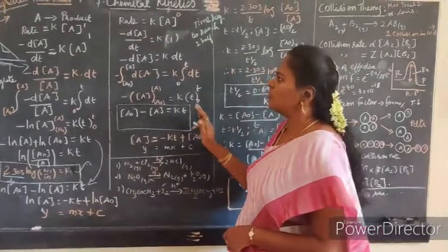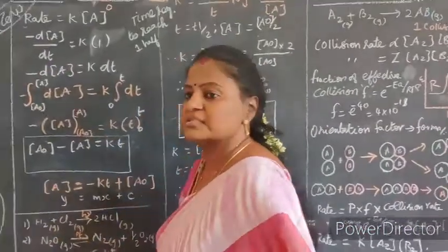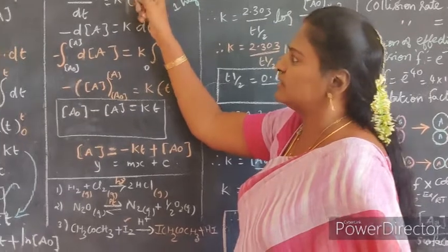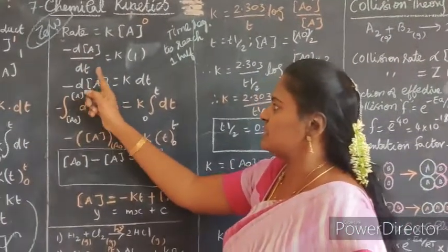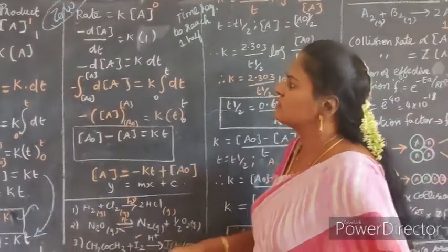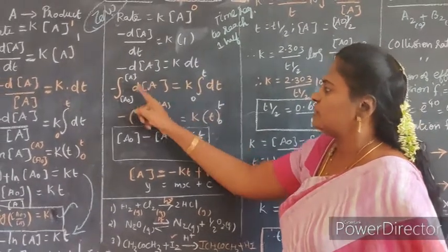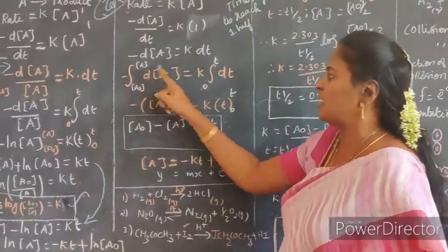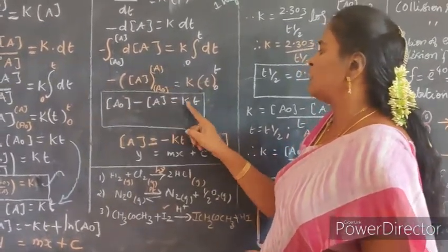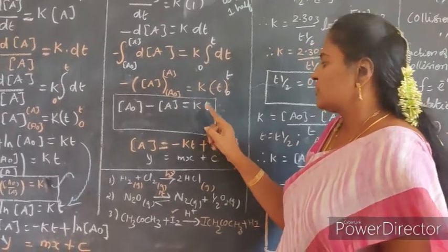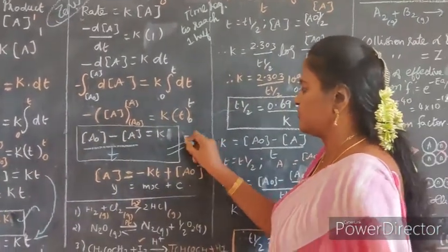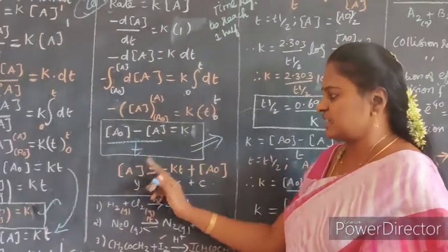Let us move on to the zero order rate constant. For zero order, the rate depends on K into A to the power 0. N value is 0 here. So minus dA/dt equals K, since anything to the power 0 is 1. Integrating this with limits A₀ to A and 0 to T, we end up with the expression: A₀ minus A equals K into T. Rearranging for K: K equals (A₀ minus A) divided by T. This is the expression for the zero order reaction rate constant.